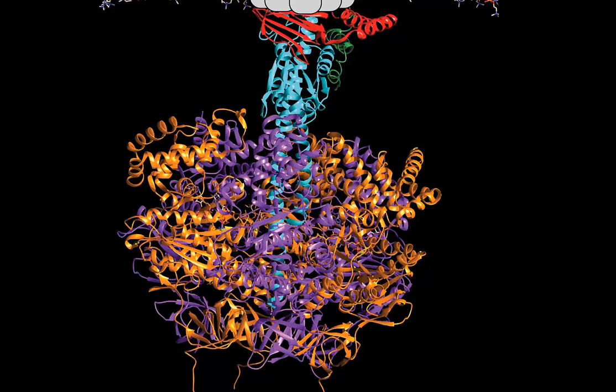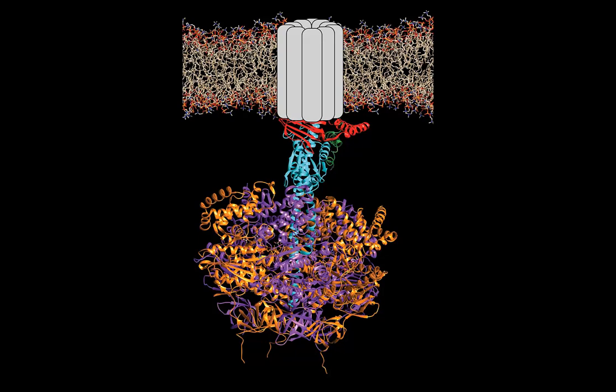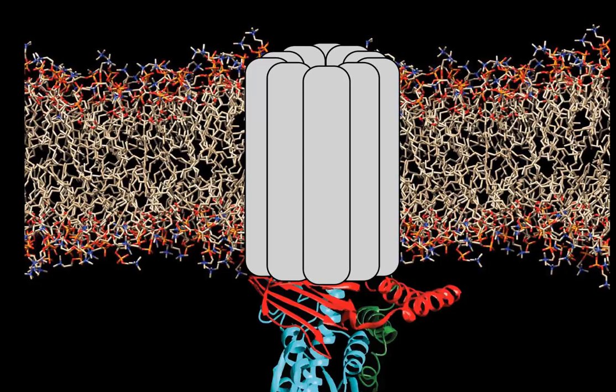Let's first focus on how protons are moved across the inner membrane of the mitochondria. This is facilitated by the F0 part of this protein. Each of these little cylinders represents a single alpha helix. This ring, called the C ring, is built of a large number of these individual alpha helices, and the idea is that this ring will rotate based on the transport of protons across the membrane.